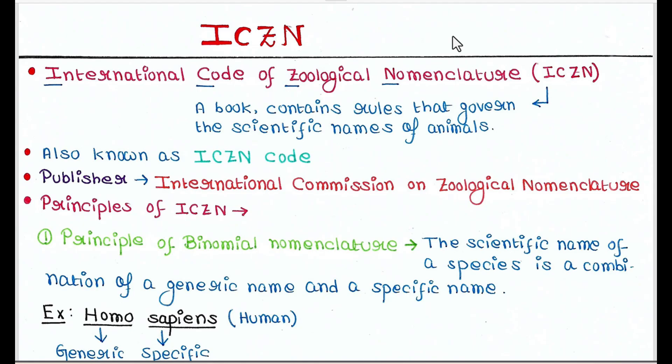So the full form of ICZN is International Code of Zoological Nomenclature. This ICZN is also known as the ICZN Code. So basically, ICZN is a book which contains rules that govern the scientific names of animals. That means if you want to name a newly discovered animal, you must follow the rules of ICZN. The publisher of this book is International Commission on Zoological Nomenclature.